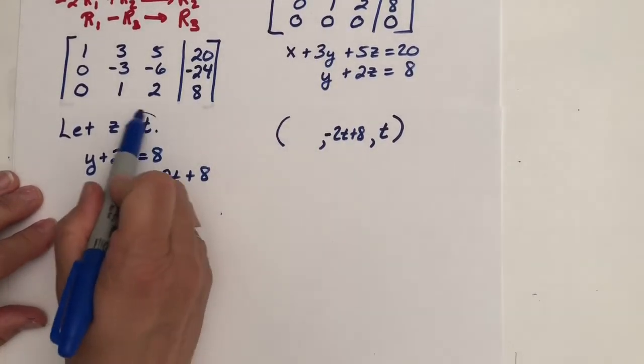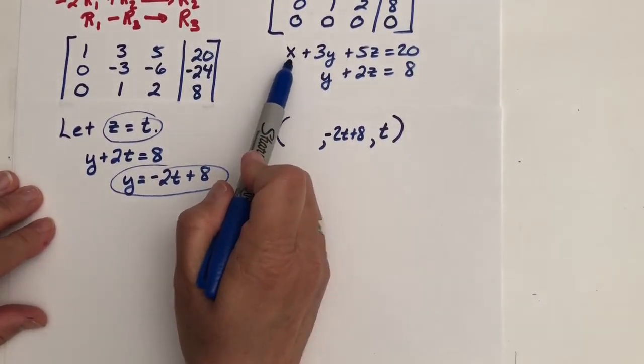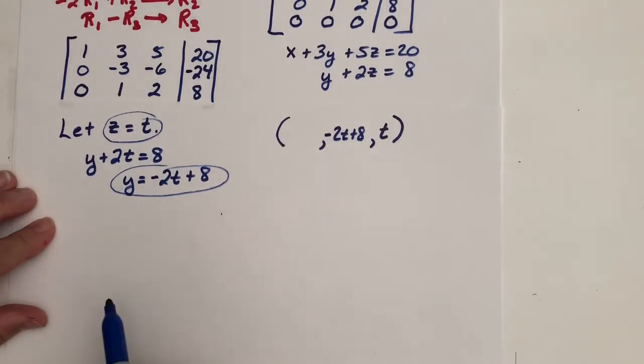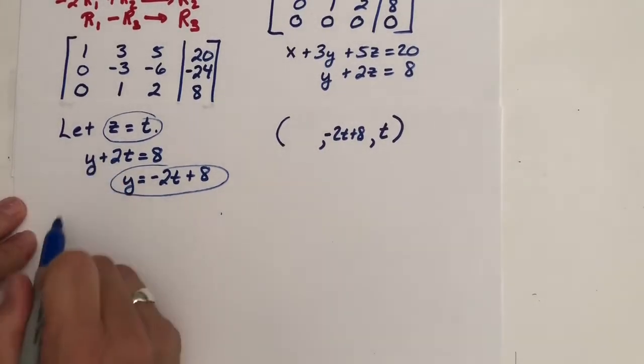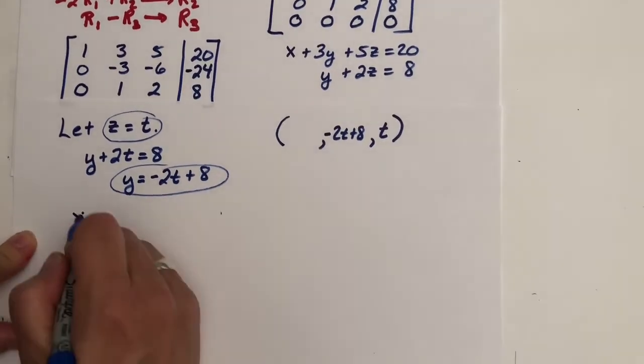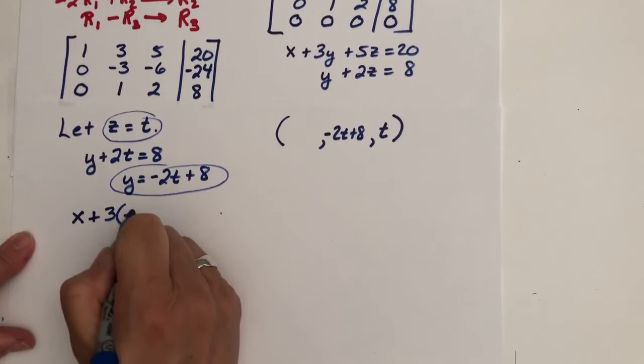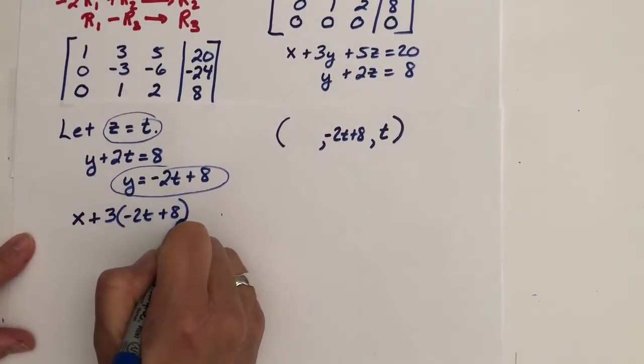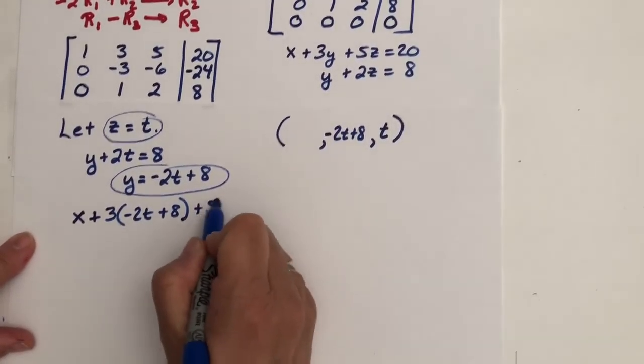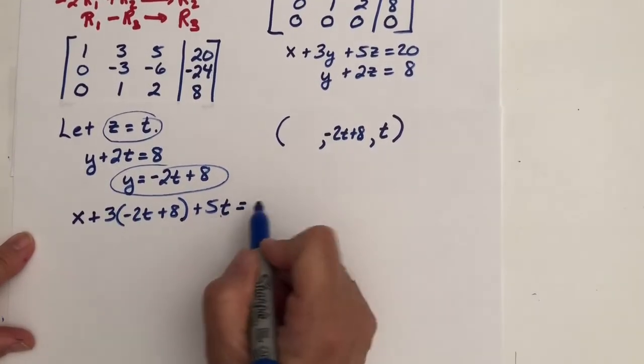So what I know is that the ordered triple that would be the solution to this system could have a t here for the z value. It has a negative 2t plus 8 for the y value. And I want a representation for x with respect to t. So we're coming up with a general solution for this dependent system. So we have our z value. We have our y value. We need our x value. And here's our relationship between x, y's and z's. So let's pop in what we know.